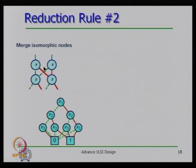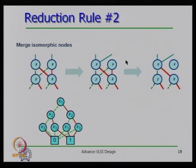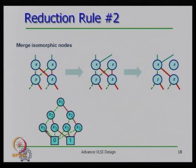There are also nodes that have identical binary decision trees below them — called isomorphic nodes. For example, if two x3 nodes have the same sub-trees in both branches, there is no point storing them separately. We merge those isomorphic nodes, and then the parent node connecting to the merged node has no role and can also be removed, further reducing the diagram.